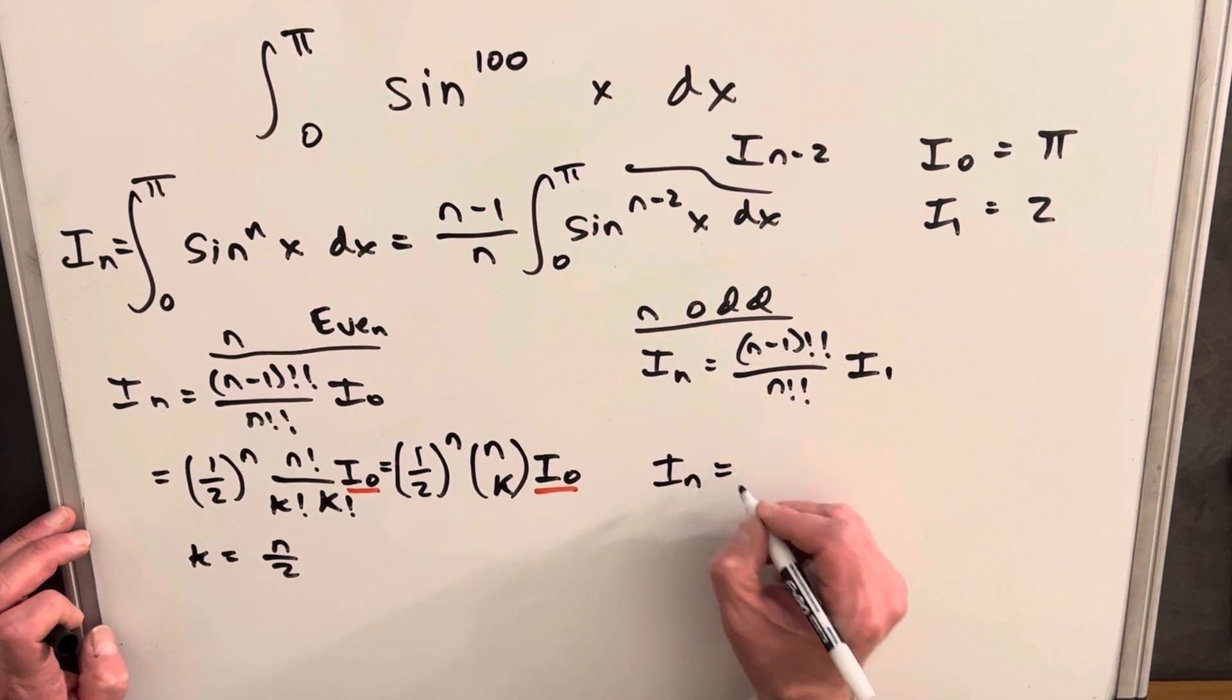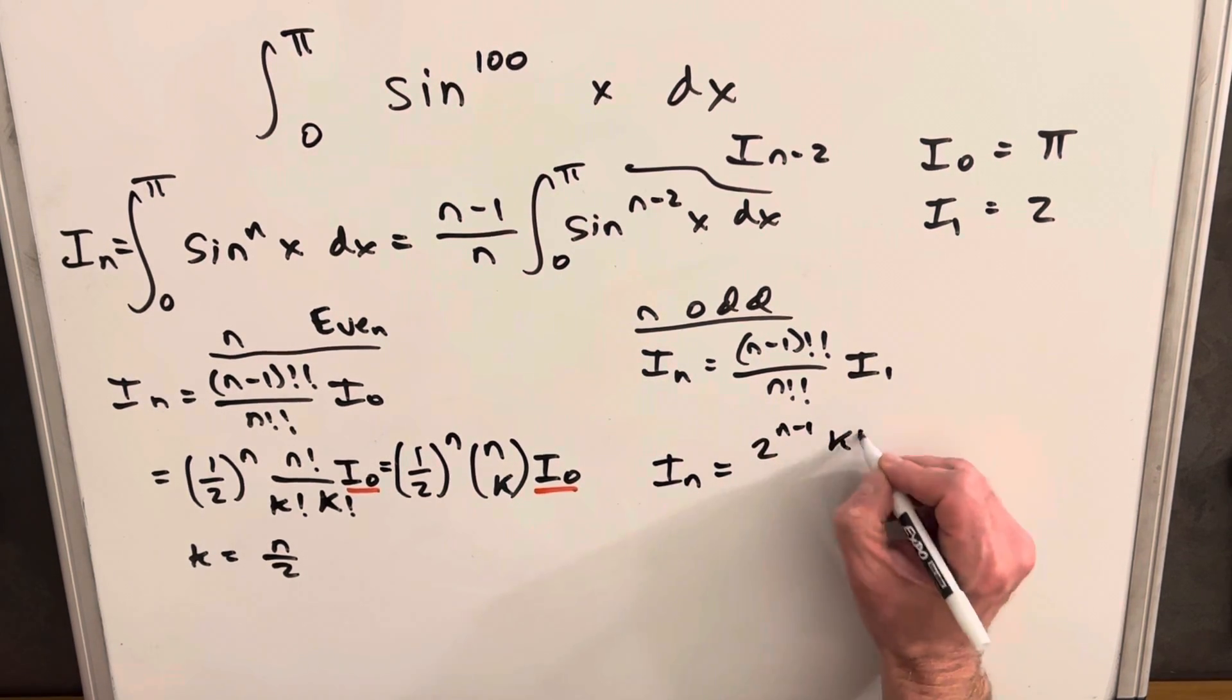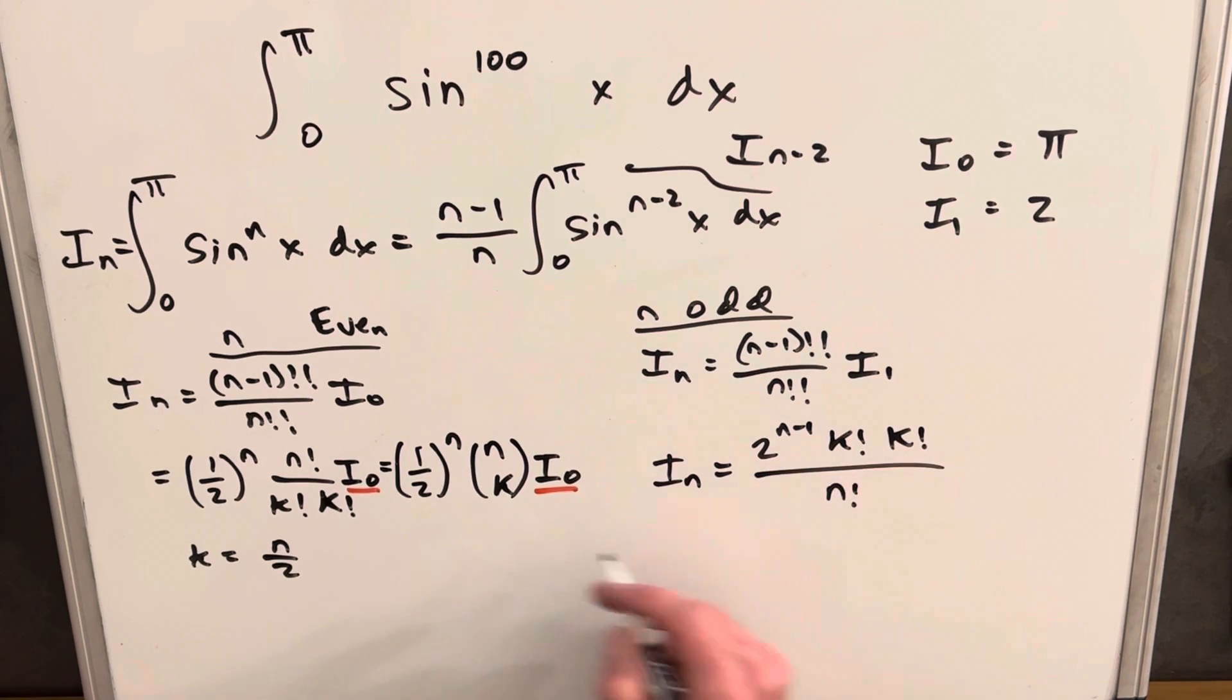Now for our case, when n is odd, we're going to have 2 to the n minus 1 times k factorial times k factorial over n factorial. But our k has got a different value. Our k over here is going to be n minus 1 over 2.